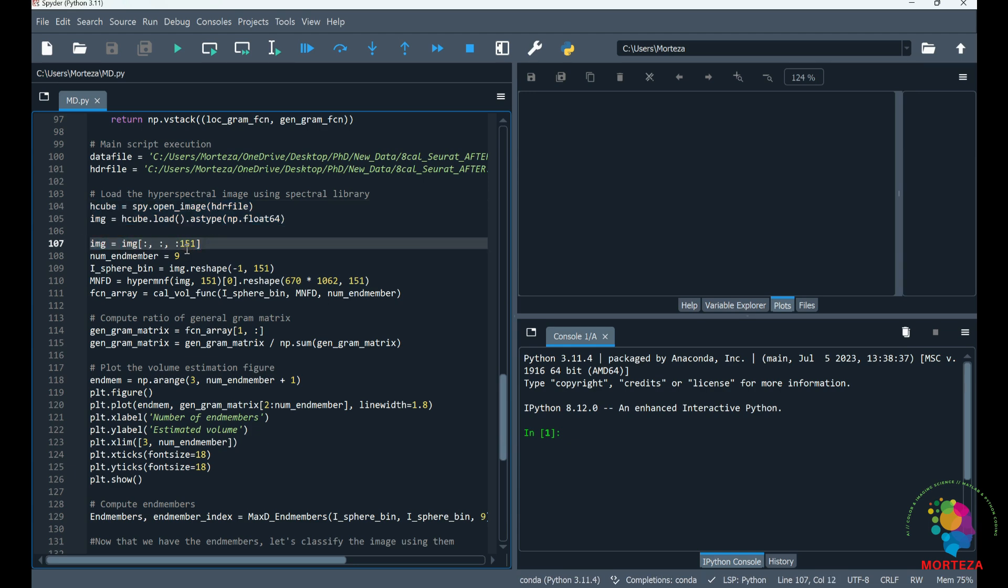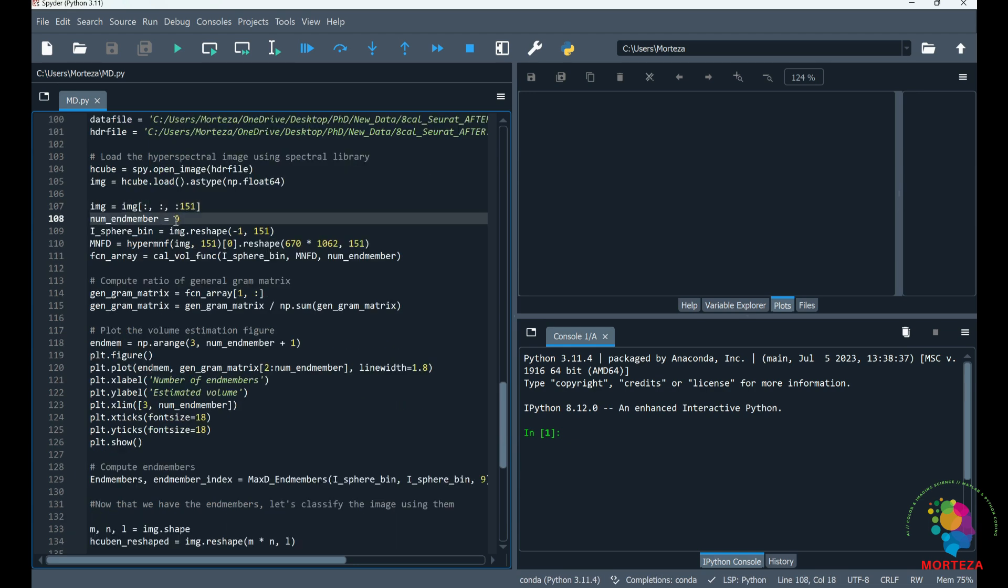The last band is noise, so I'm just going to exclude the last band, so I only have 151 bands. I know that this data has nine end members, but it doesn't matter what you put here. You just put a number here and then check the volume of the linearly independent end members. Using that, you could tell if your number is correct or not. If on the nine end members the volume is still not zero, that means you need one more, so you put 10.